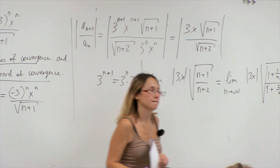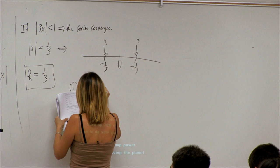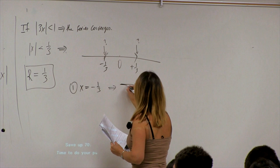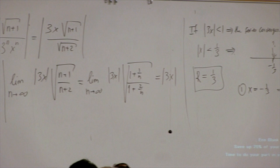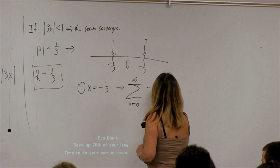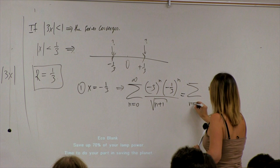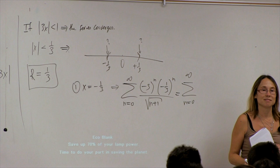To check the endpoints, I check them by hand. Take x equals −1/3. The series becomes Σ (−3)^n · (−1/3)^n / √(n+1). What's (−3)^n · (−1/3)^n? That equals (−3 · −1/3)^n = 1^n = 1. So we have Σ 1/√(n+1), which starting from n=0 is essentially Σ 1/√n.